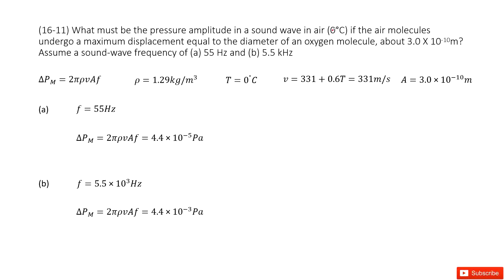Let's see what quantities are given. First, the temperature T is 0 degrees. And also the density for the air — you can check it in your textbook. The next thing we know is the amplitude for the oscillation.